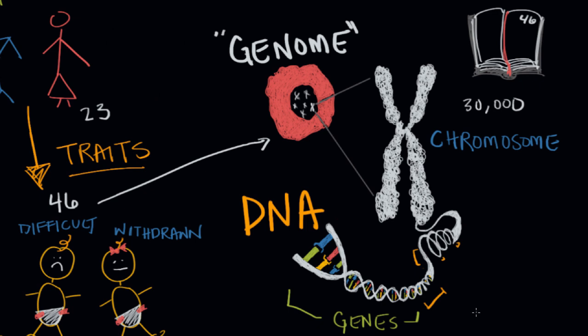Some of the more simple traits can be traced fairly specifically to certain genes. So like eye color or hair color, relatively simple traits can be traced back to maybe specific genes. We can actually see which genes are controlling those specific traits.